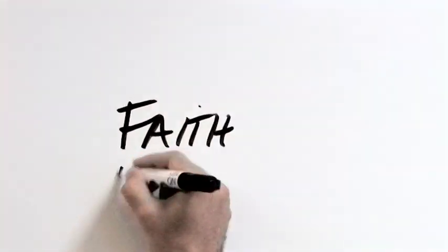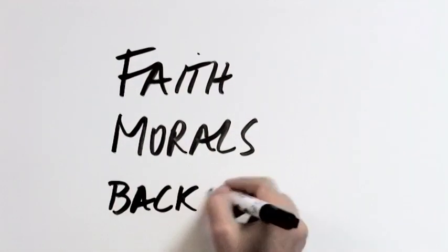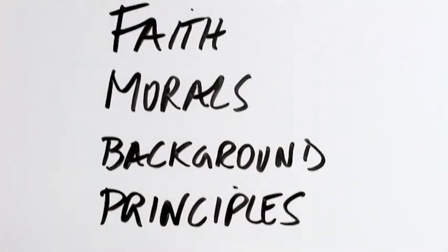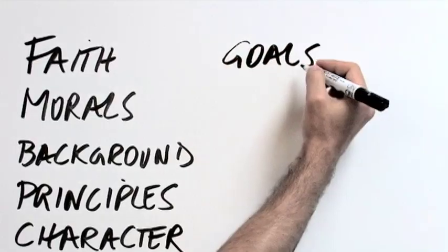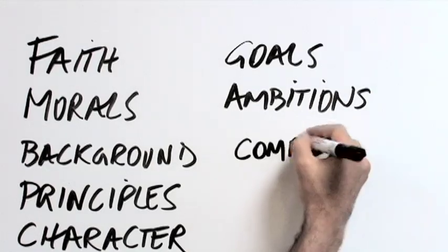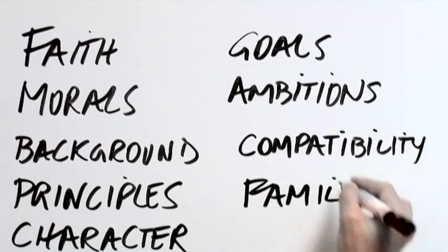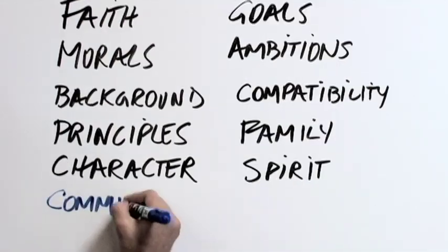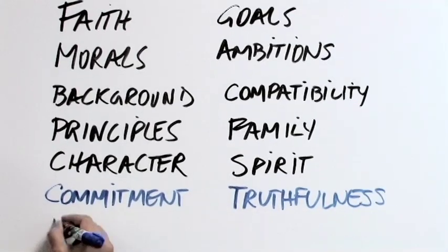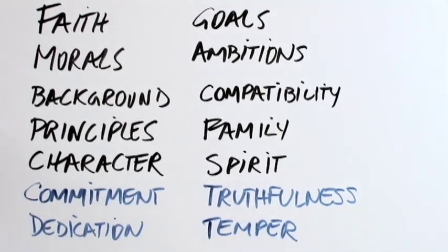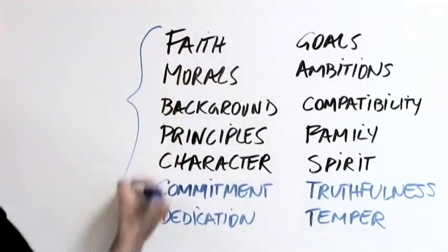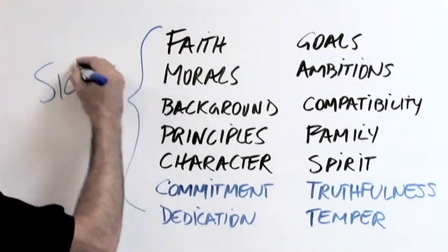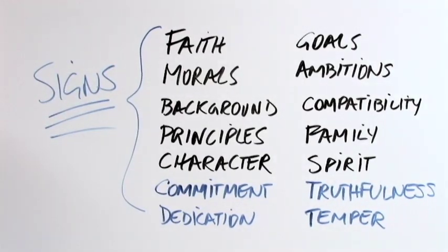Things like faith, morals, background, principles, character, goals, ambitions, compatibility, family, spirit, commitment, truthfulness, dedication, temper, and etc. These are all signs that determine a person's value.